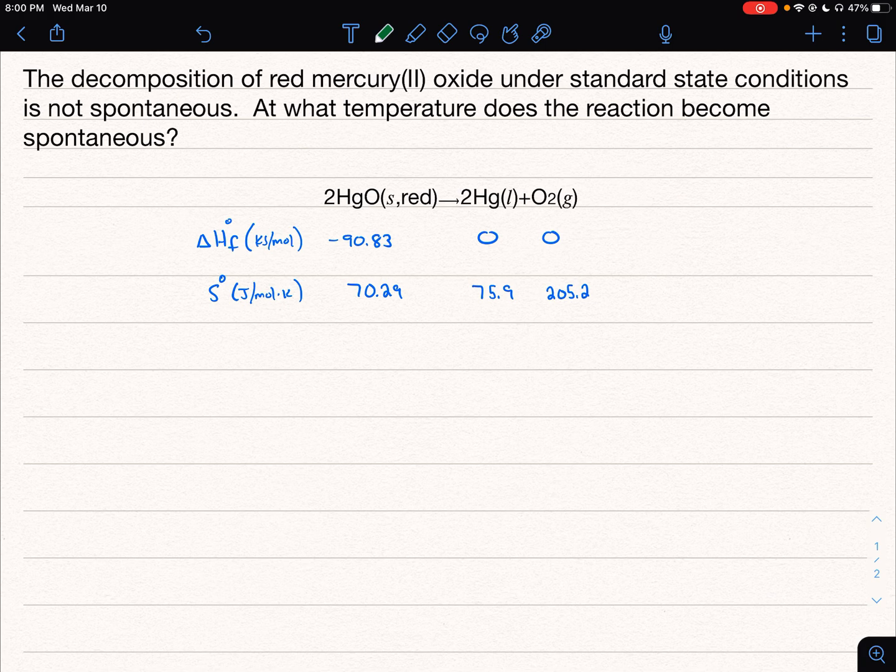As written, the question is talking about this reaction, the decomposition of mercury oxide to form mercury liquid and oxygen gas. We can see the question is asking: we're told that under standard conditions, the reaction is not spontaneous. And then the question is asking at what temperature does the reaction become spontaneous?